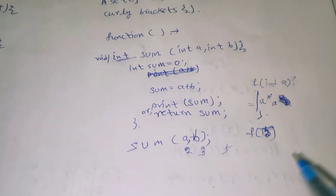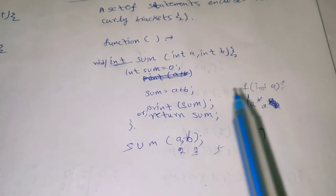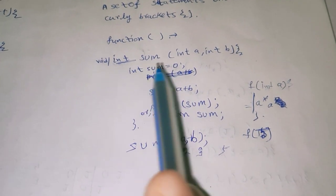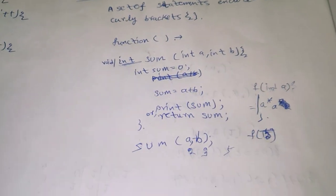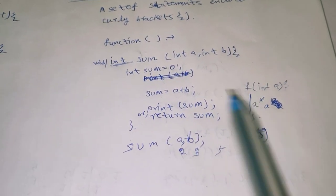5 into 5 means 25. 5 squared is 25. So how we can define a function, how we declare a function, what is the return type of a function - we discuss here.